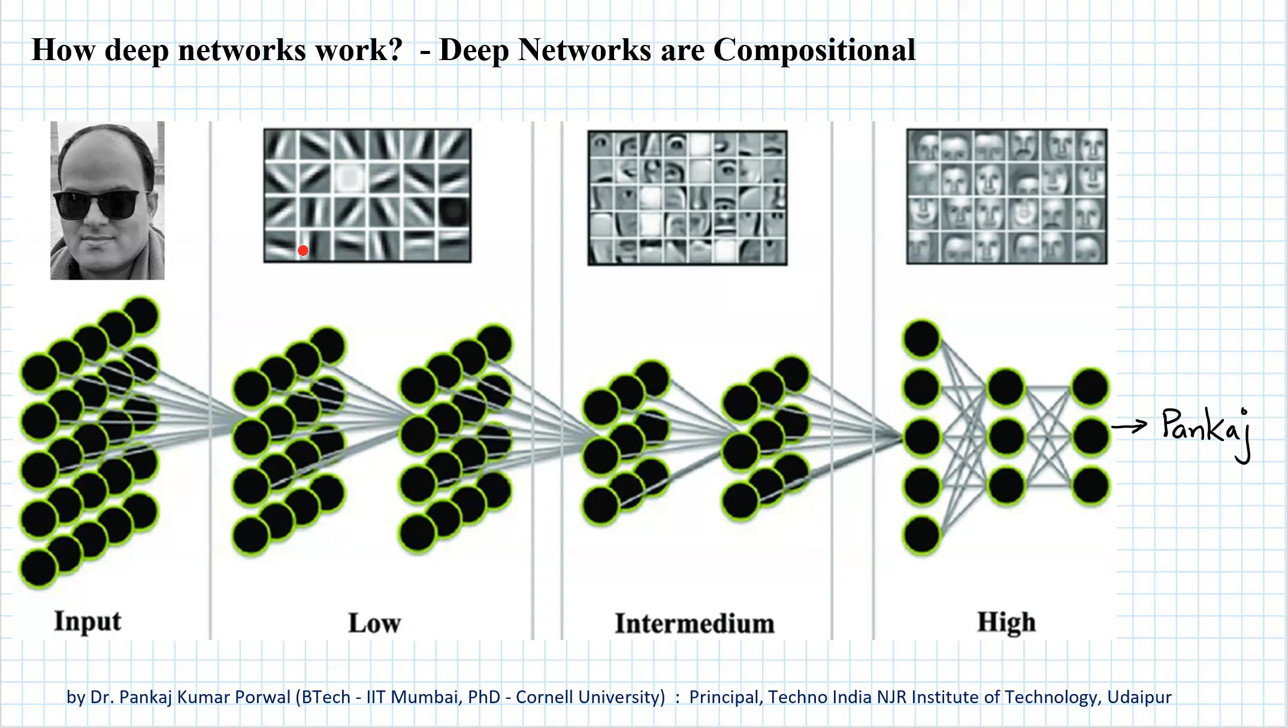Using those edges, the later layers learn to extract parts of the face like eye, nose, lips, etc. Combining those parts, it learns the full faces, and using the features learned in the entire network, it can predict the label for that image with very high accuracy.